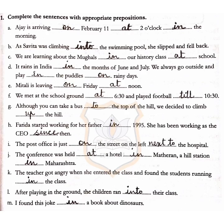Now we move on to Activity 1: Complete the sentence with appropriate preposition. Ajay is arriving on February 11 at 2 o'clock in the morning. Savita was climbing into the swimming pool when she slipped and fell back. We are learning about the Mughals in our history class at school. It rains in India in the month of June and July. We always go outside and play in the puddle on a rainy day. Mitali is leaving on Friday at noon. We met at the school ground at 6:30 and played football till 10:30.